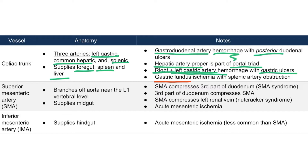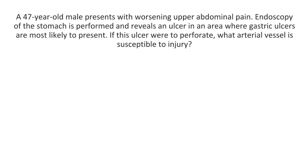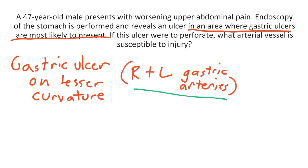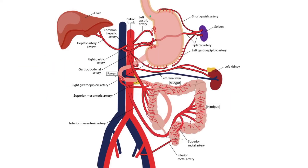Let's do a question to apply what we've learned. A 47-year-old male presents with worsening upper abdominal pain. Endoscopy reveals an ulcer in an area where gastric ulcers are most likely to present. If this ulcer were to perforate, what arterial vessel is susceptible to injury? The ulcer is located on the lesser curvature of the stomach, and the vessels located there are the right and left gastric arteries — these are susceptible to hemorrhage in a gastric ulcer perforation.